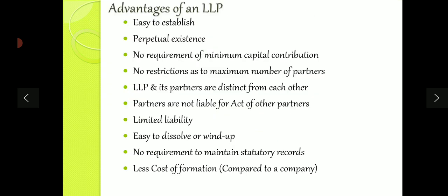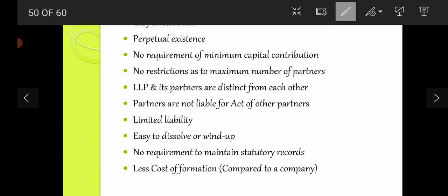Now let's look at the advantages of LLP. First, LLP is comparatively easy to establish — compared to a company, setting up an LLP is easier with fewer legal formalities. Second, perpetual existence — just like a company, an LLP has perpetual existence, meaning partners can come and go but the LLP continues because it is a separate legal entity. Third, no minimum capital requirement — partners can invest as much capital as they wish. Fourth, no restriction on the maximum number of partners. Fifth, LLP and partners are distinct from each other — the LLP is a separate legal entity.